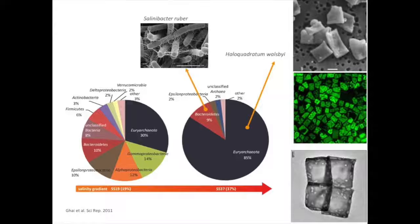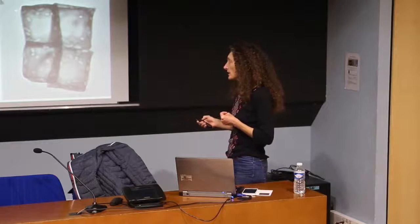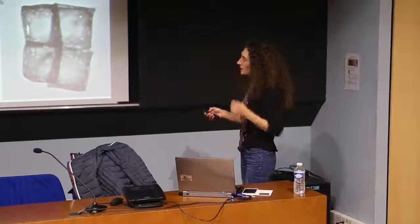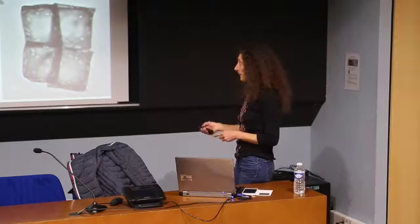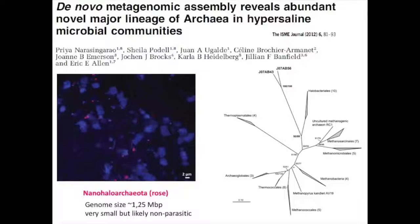Haloquadratum gains some energy from light, which helps explain its unusual flat cell shape. Gas vacuoles visible within the cell allow it to control the orientation of this flat surface towards the sun, so the cell acts like a solar panel. Metagenomic approaches have also revealed new lineages associated with these environments, including the Nanohaloarchaeota — very tiny cells with relatively small genomes compared to the average bacterium.